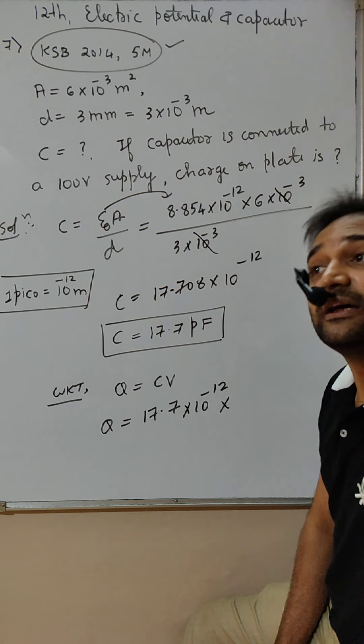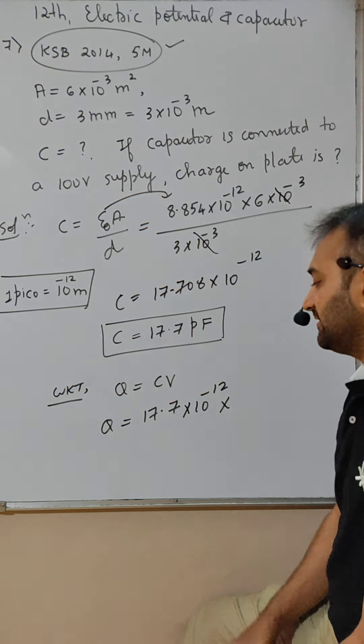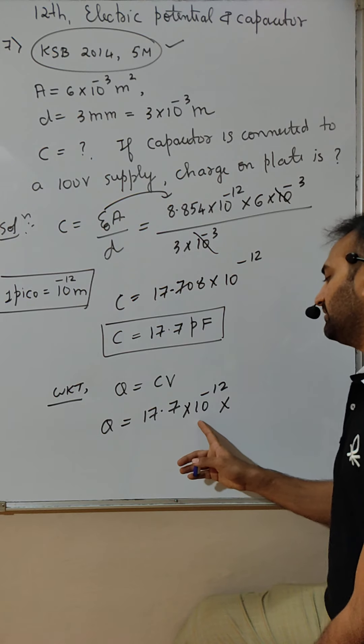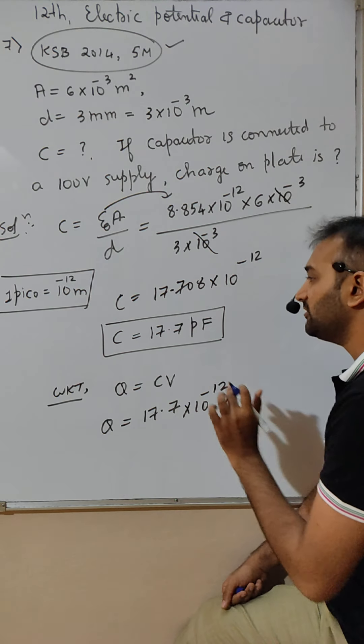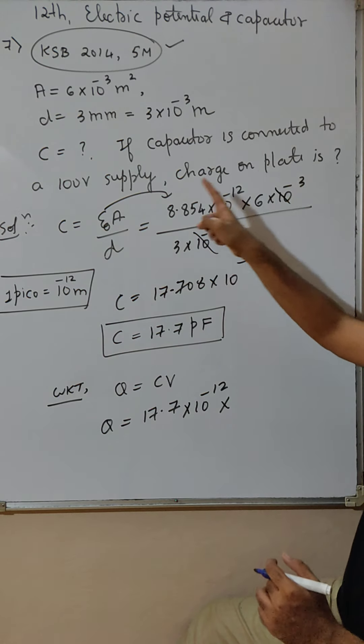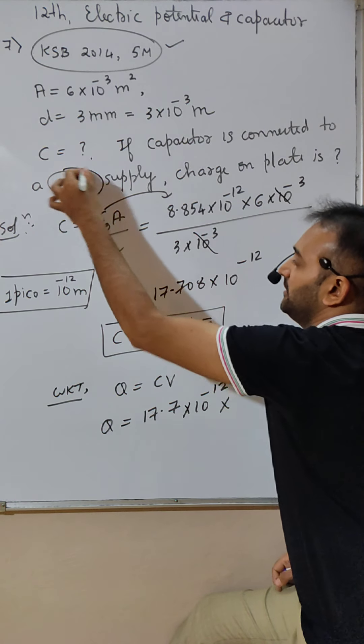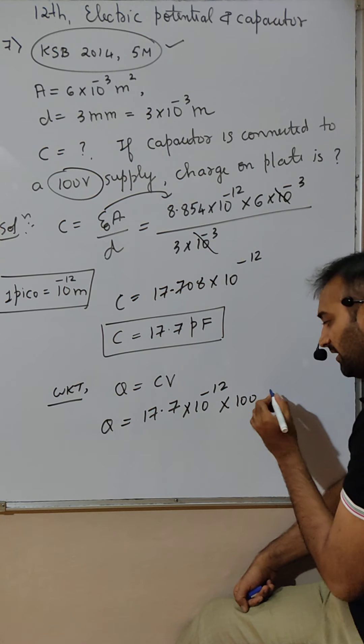Pico is for representation. C is 17.7 into 10 raised to minus 12. What is V? Voltage is given as 100. So here 100 is written.